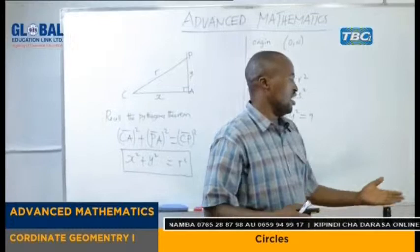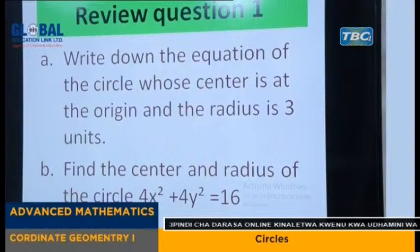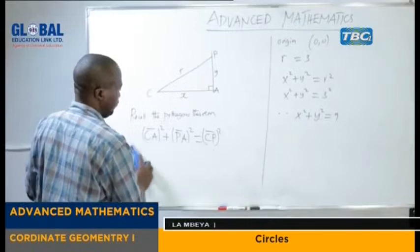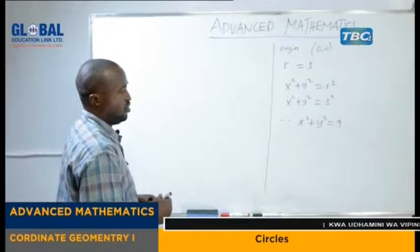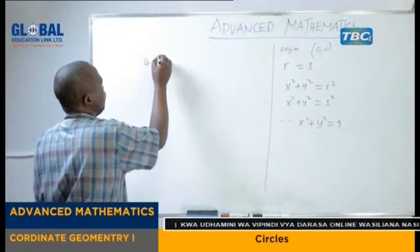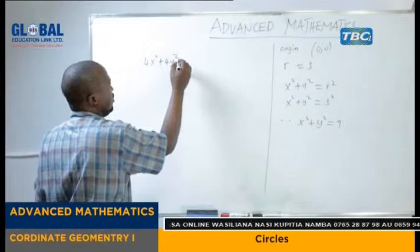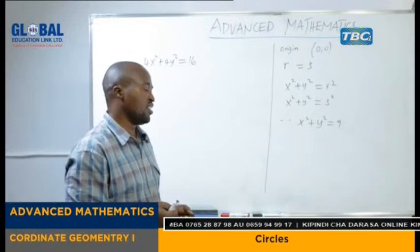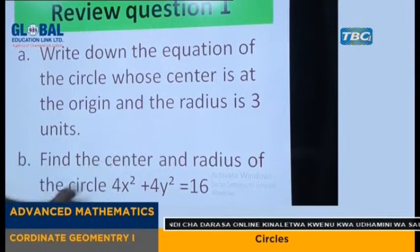My dear students, again let us proceed with the second review question, that is B: find the center and radius of the circle. 4x squared plus 4y squared is equal to 16. So here we have the second equation: 4x squared plus 4y squared is equal to 16. That is the equation of the circle. In this case we are supposed to find the center and the radius.